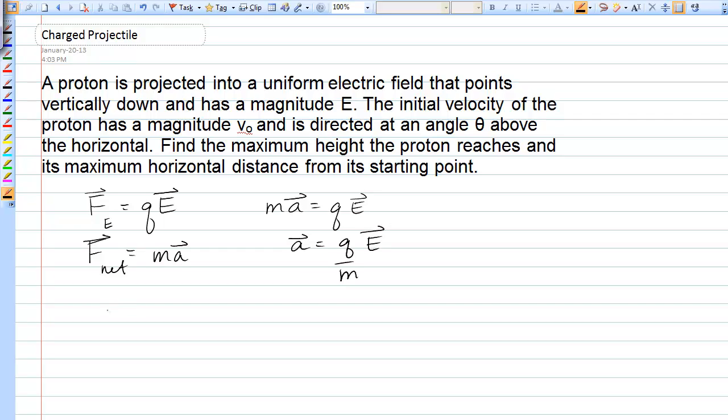Now, the electric field is vertically down with magnitude E, which means the acceleration of the proton is also down. Therefore, I'm going to write this as negative QE over M j hat. So the magnitude of the acceleration is QE over M, and its direction is vertically down.